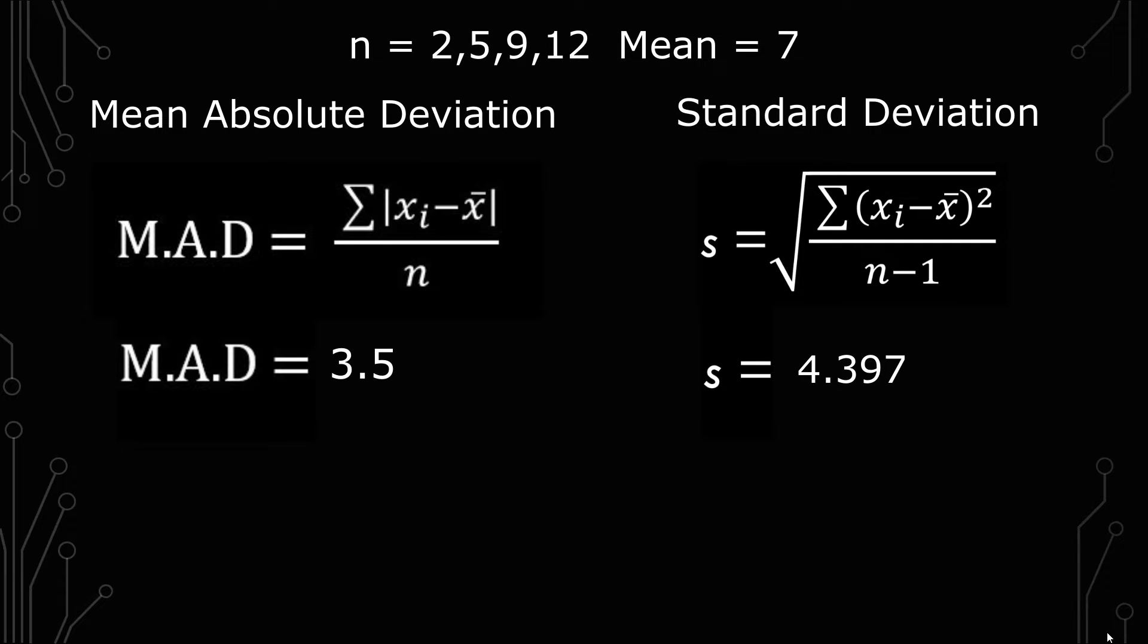Well, you know, I'm only looking at the deviation between each observation in the MAD. Why do I have to look at the square with the standard deviation and then divide it by n minus one? So why is that there?